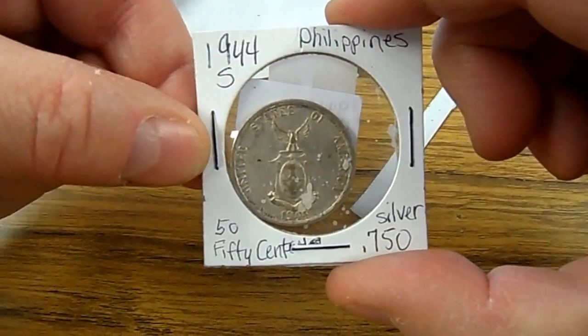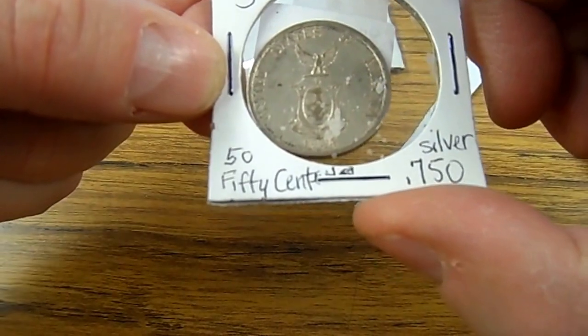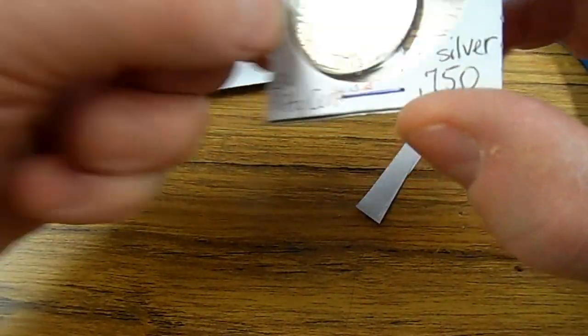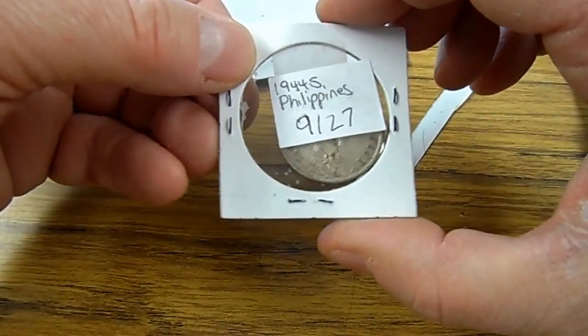Oh, here we go. Here's a nice 1944 Philippines 50 cent piece. Okay, 0.75 silver.